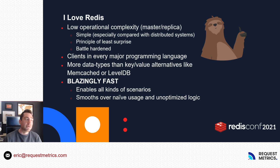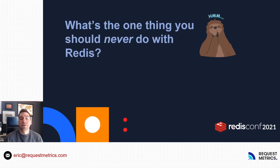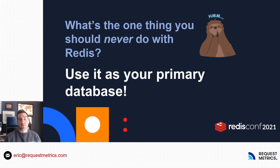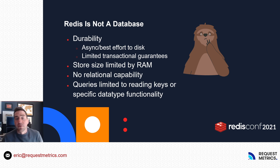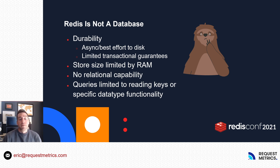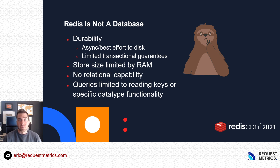Common use cases for that speed include level 2 caching, read-through caching, and transient data storage — mainly caching — because everyone knows the one thing you should never do with Redis is use it as your primary database. That's because Redis is not a database in the traditional sense. It has limitations: most of the data lives in memory, durability is async and best effort, and there are limited transactional guarantees. You need as much RAM as you have data. There's also no relational capability — no foreign key constraints, referential integrity — and querying is limited to reading keys. No SQL, no joining, no selects.